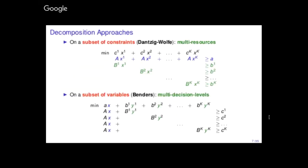A bit about decomposition approaches. Here I will talk mainly about Dantzig-Wolfe and Benders, and you can see these as one being the dual of the other, in the sense that in Dantzig-Wolfe you decompose on the rows — we have multiple resources, and these are linked by linking constraints — whereas in Benders decomposition you have multiple decision levels, and these are linked by the blue rows. Once you fix the blue rows, all your subproblems can be solved independently. The same applies for Dantzig-Wolfe.